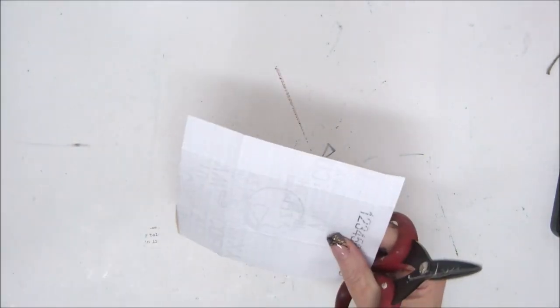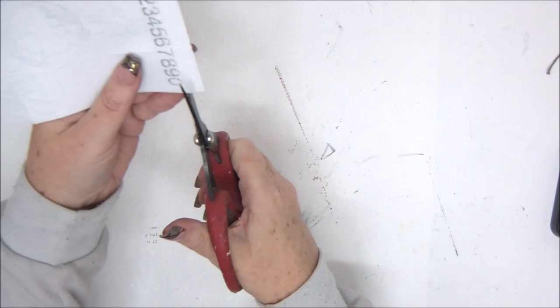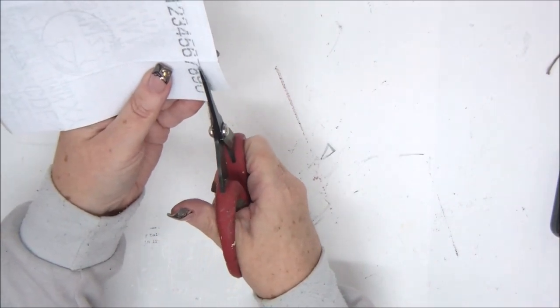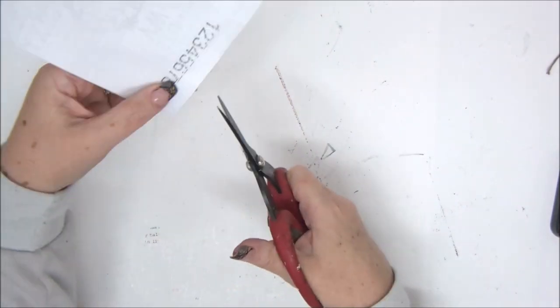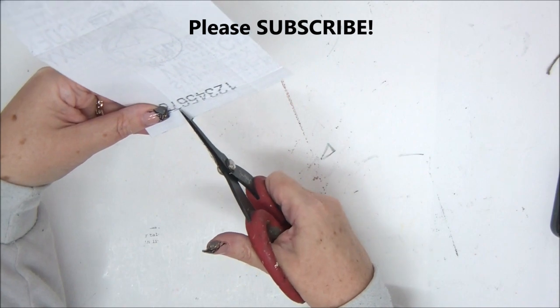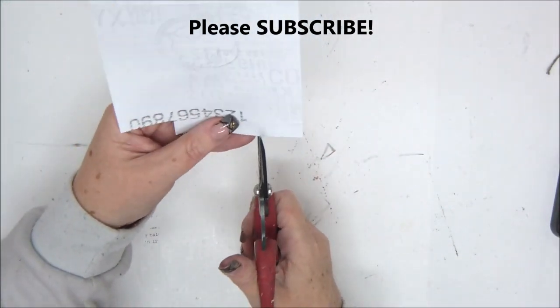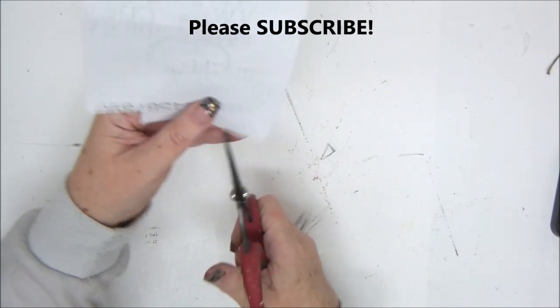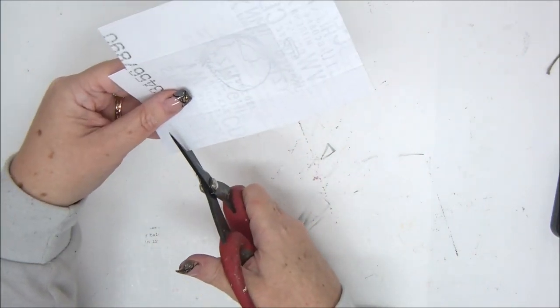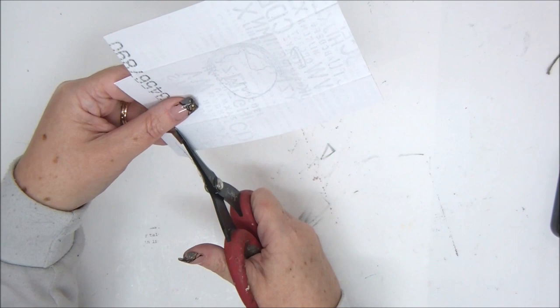Now we can go ahead and cut the corners. We cut the corners until the score lines meet. So along the score lines until they meet, on all four corners you need to cut that out. You can do it with a craft knife. I think scissors are much faster.